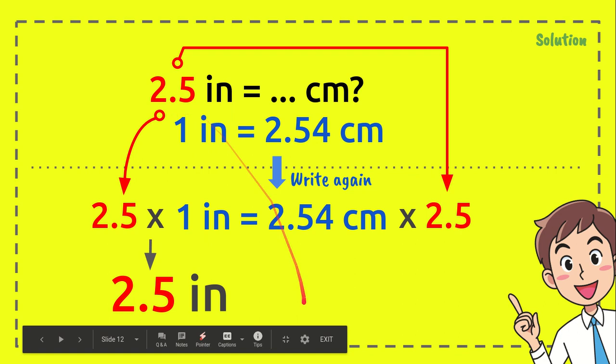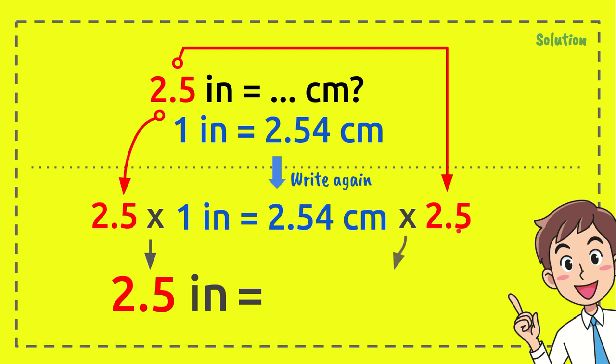And then 2.54 centimeters times 2.5 equals 6.35 centimeters. And that's the answer to the question.